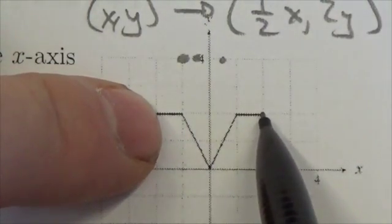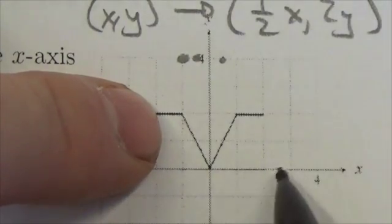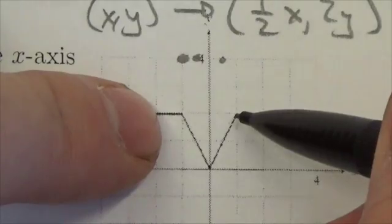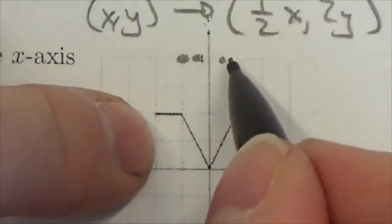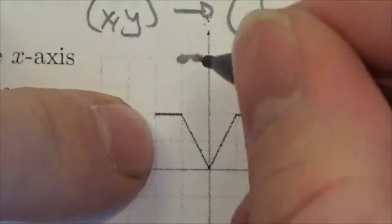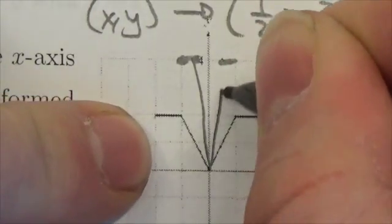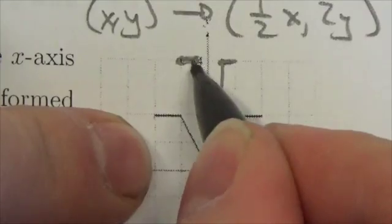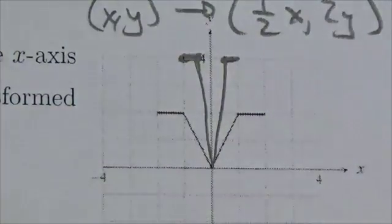This point is going to go, it's got an x-coordinate of 2, so half of that is going to be 1. And then a y-coordinate of 2 becomes 4, so it's going to go up to here. So this is actually going to look like this, right there. It's going to get really narrow, and that's our graph there.